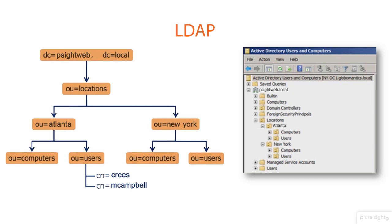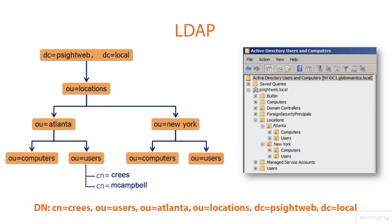Looking at the entire LDAP distinguished name, you'll see it reads: CN=CREES, OU=Users, OU=Atlanta, OU=Locations, DC=PSiteWeb, DC=local. There are commas between each of these subcomponents, and that's the layout or structure of an LDAP distinguished name.